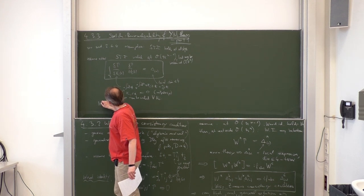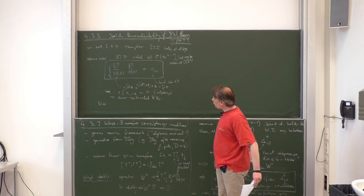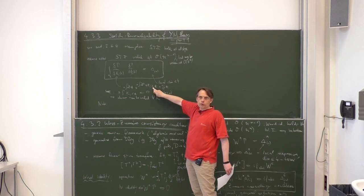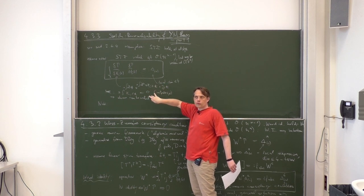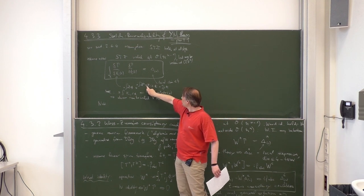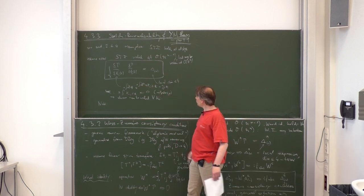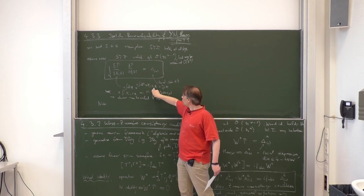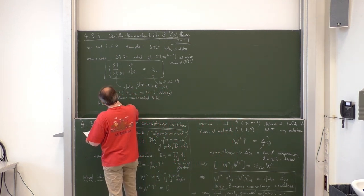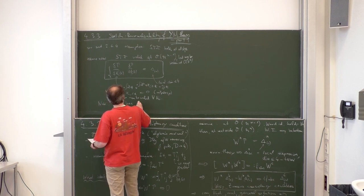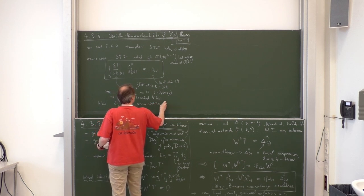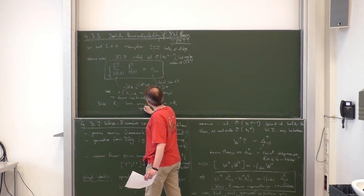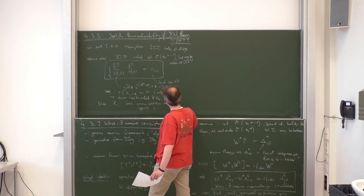Another note: the k's are the sources for BRST transformations, and the BRST operator s is fermionic, so the BRST transformation of anything has always the opposite statistics to the original quantity. Therefore in order to make the whole expression bosonic — as it must be as the exponent of the path integral — the k's must have the same statistics as the BRST transformation of a field, and therefore the opposite statistics as the original field φ.